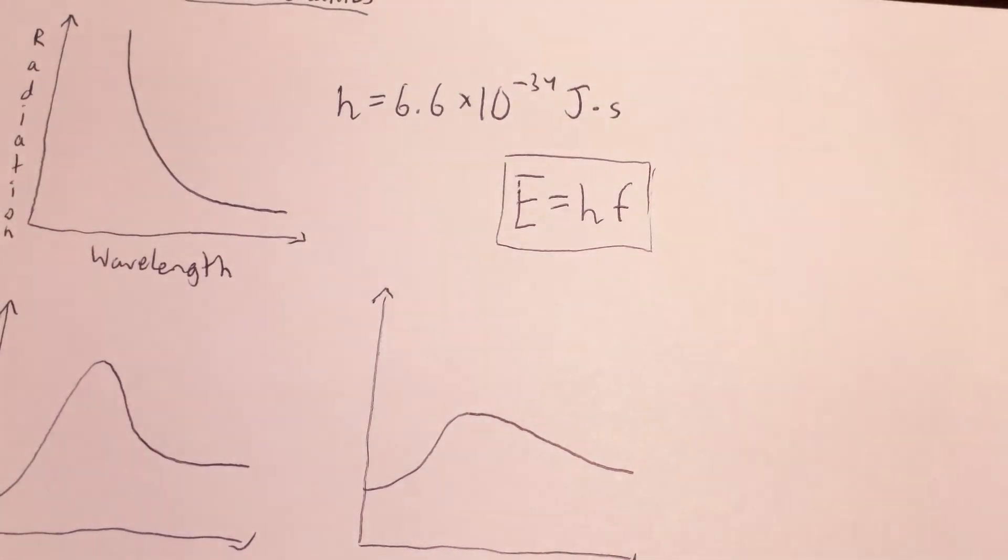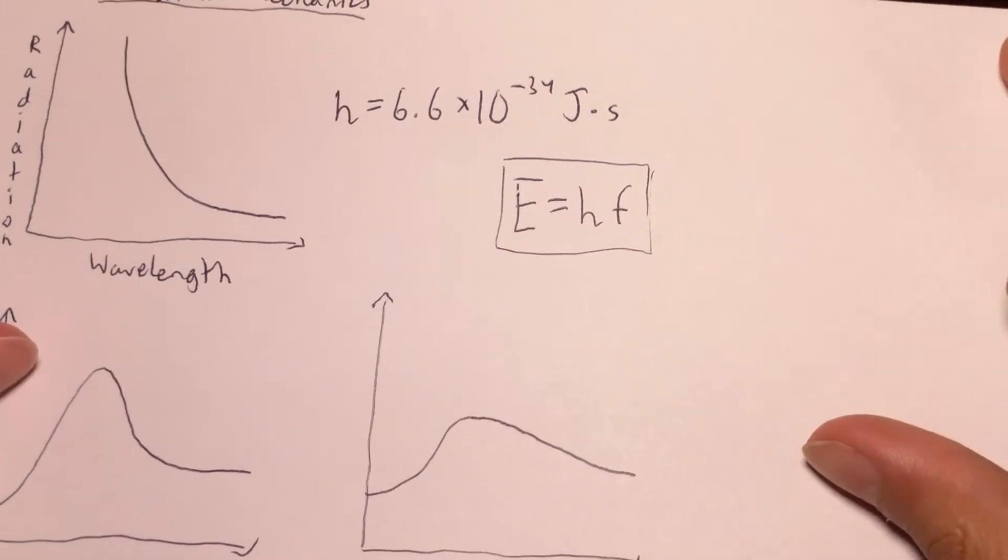Now, most people thought that, yeah, this is a nice mathematical trick, but of course light is a wave. It can't be anything else. So they thought that maybe some better theory would come out later, which actually described the real world, but then something happened. The photoelectric effect was solved. And let's talk about that.